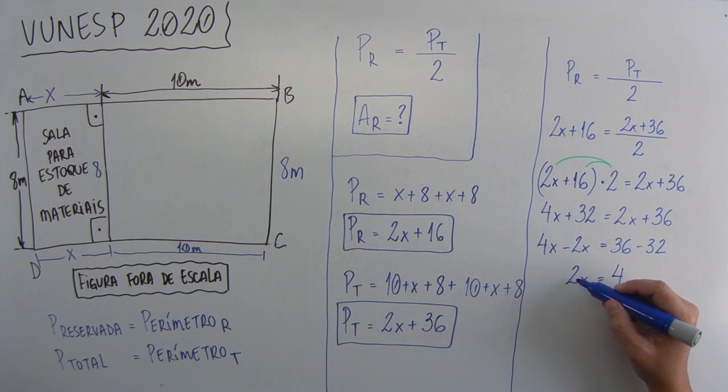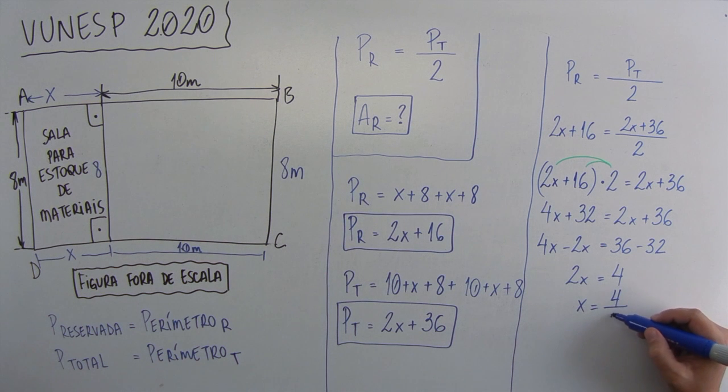Agora, esse 2 que está multiplicando, vai passar dividindo, X igual a 4 dividido por 2, X igual a 2.